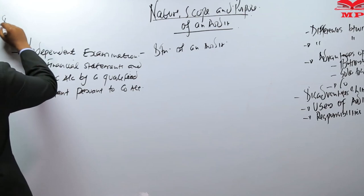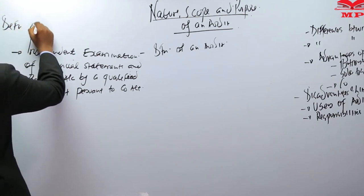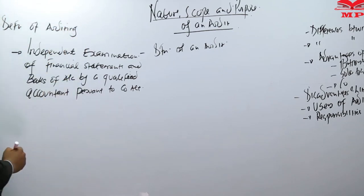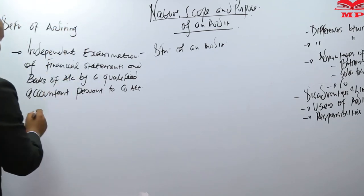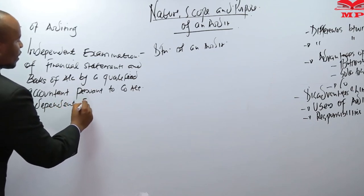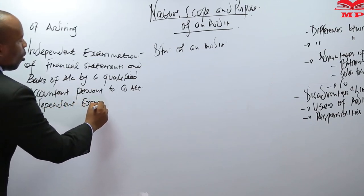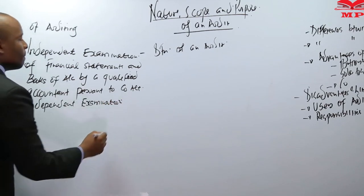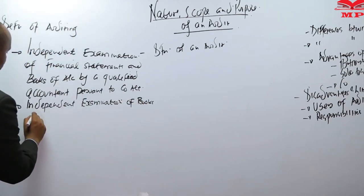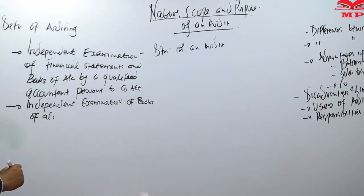This is how we do the definition of auditing. You can use that simple definition, or you can decide to say it means independent examination of books of accounts and the examination of the financial statement.